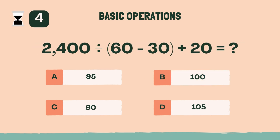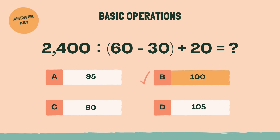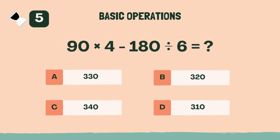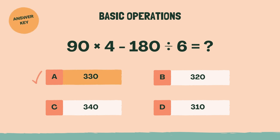What is 2,400 divided by 60 minus 30 plus 20? The answer is B, 100. What is 90 times 4 minus 180 divided by 6? The answer is A, 330.